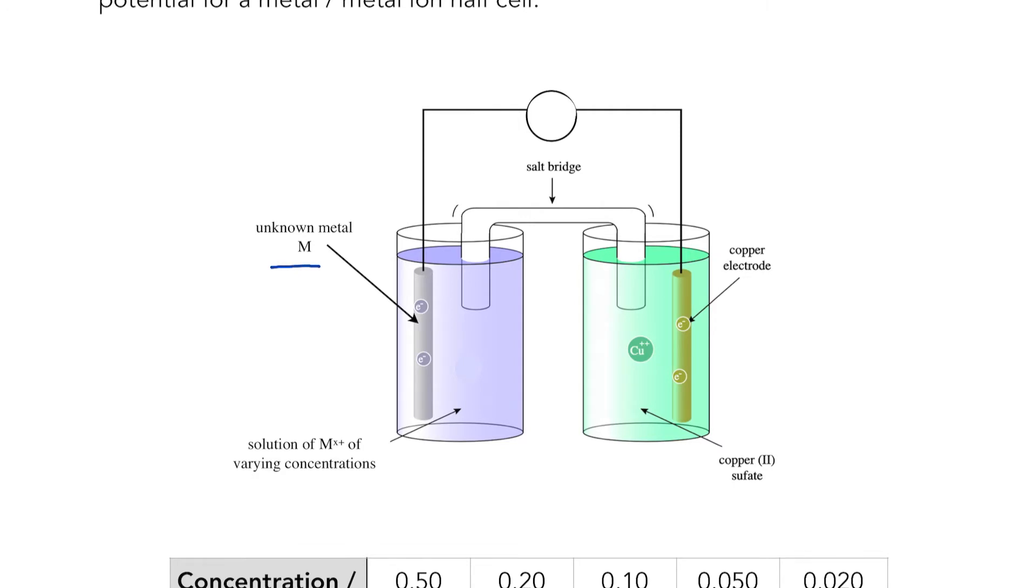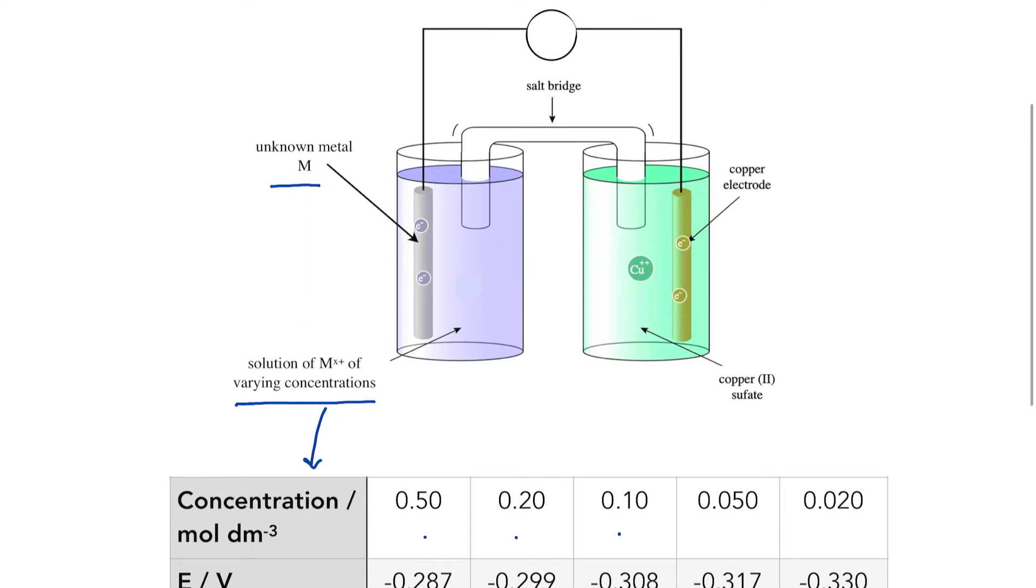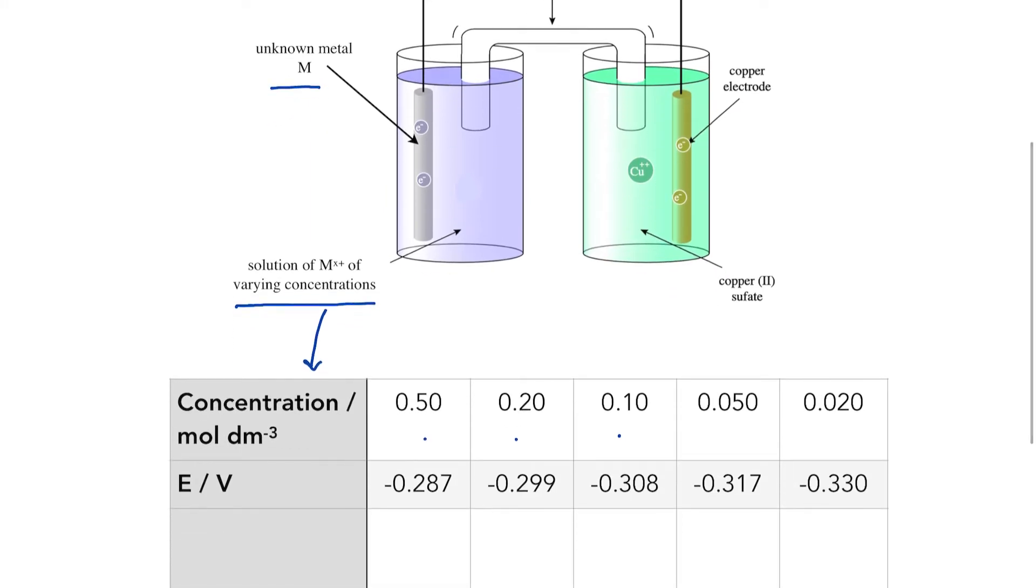And varying concentrations of solution of Mx+. We don't know the charge on the ion. They have carried out this experiment with different concentrations of our metal ion, that's our Mx+: 0.5, 0.2, 0.1, and so on.